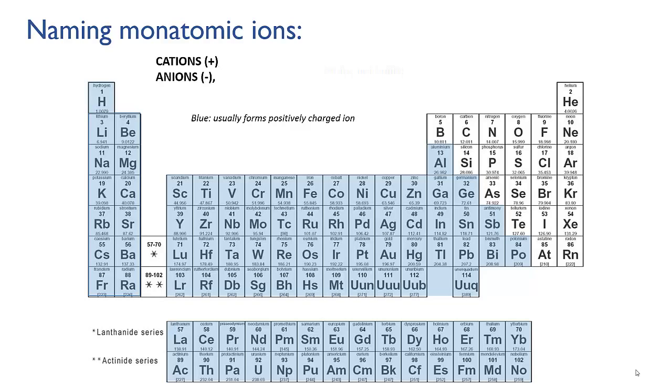And I'm going to shade those that usually form negative ions in orange. This corresponds to the non-metals. And also hydrogen. It's rare but hydrogen is able to form a negative ion.